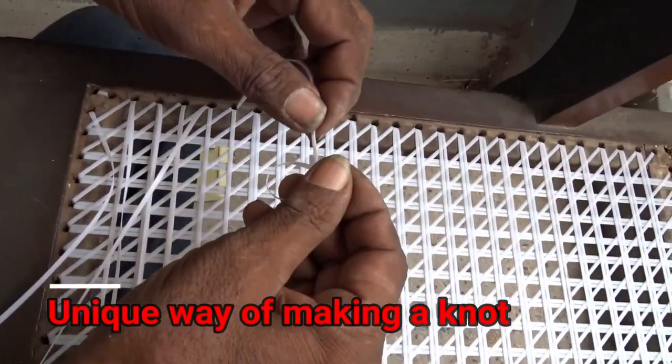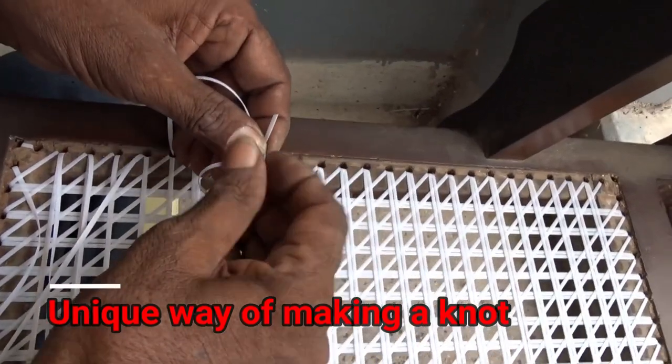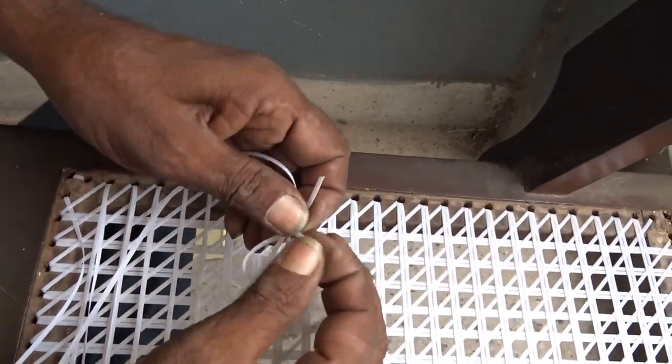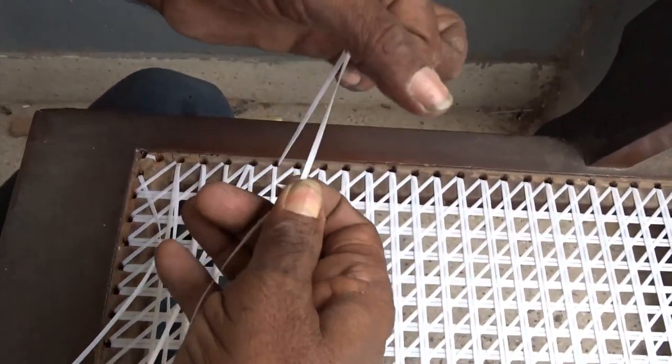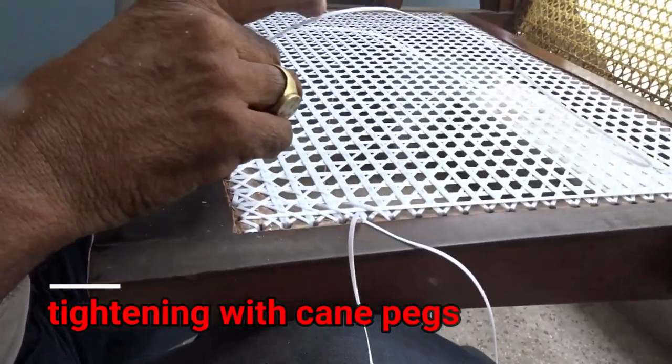The fourth horizontal layer. And this is the unique way of making a knot which will make it tight and not easily opened. It will not come out loose.